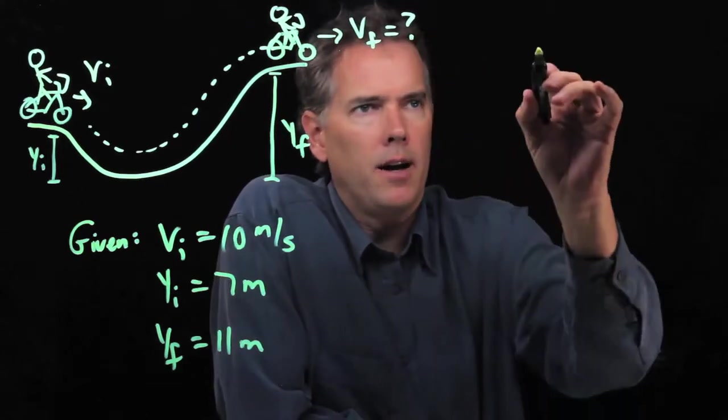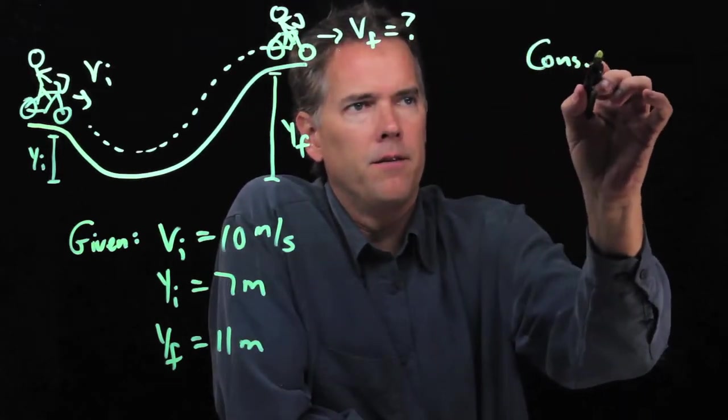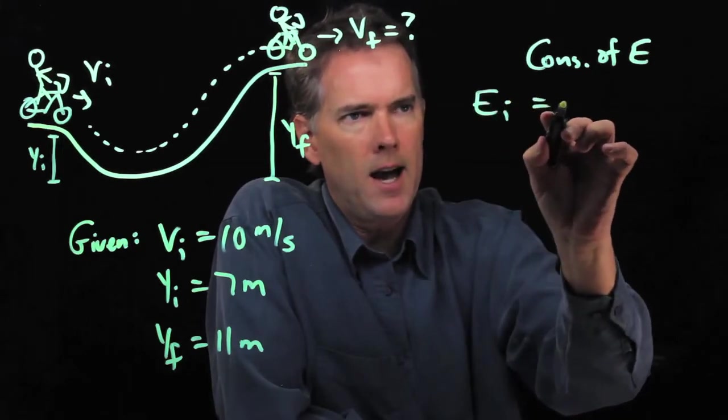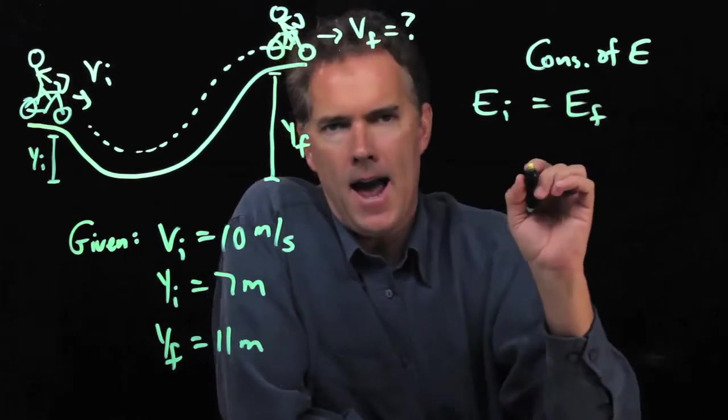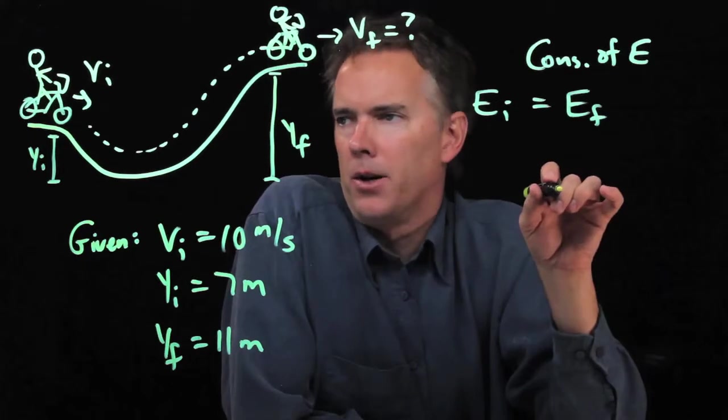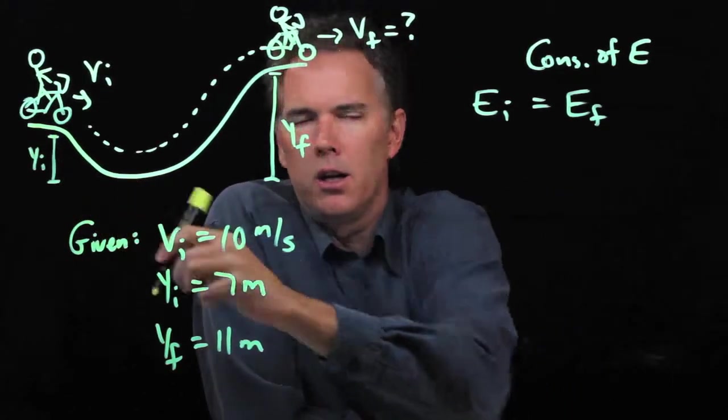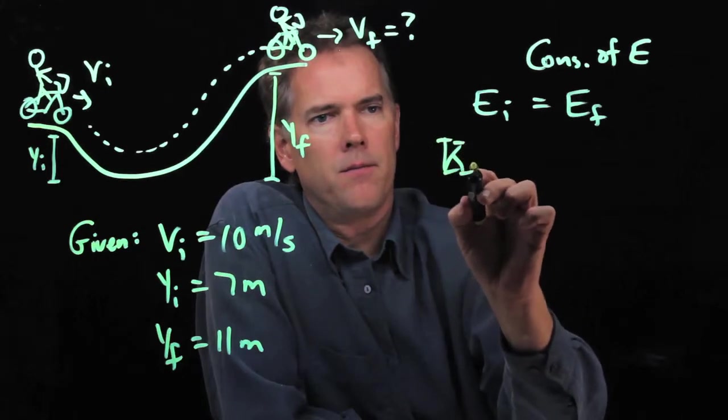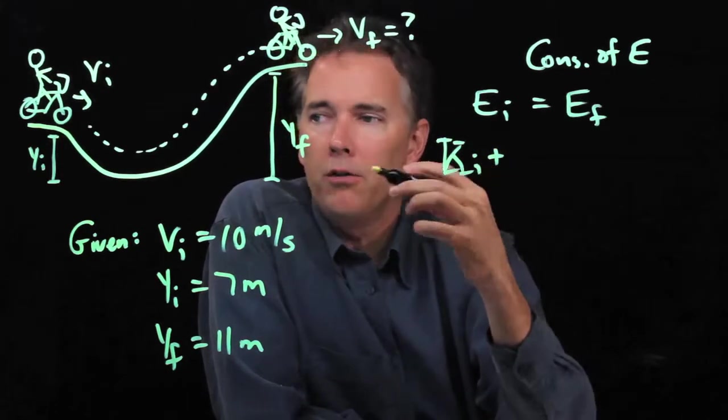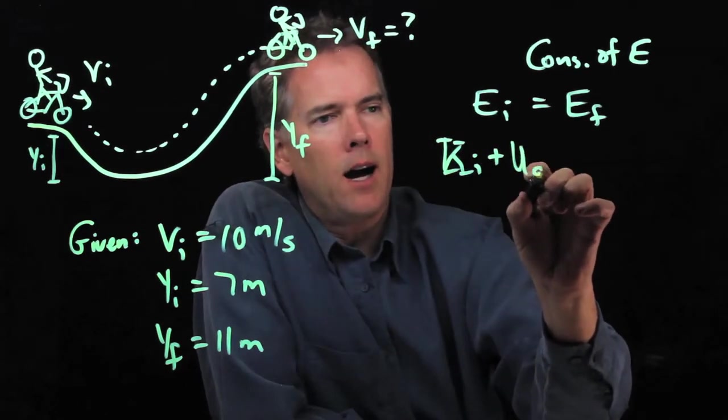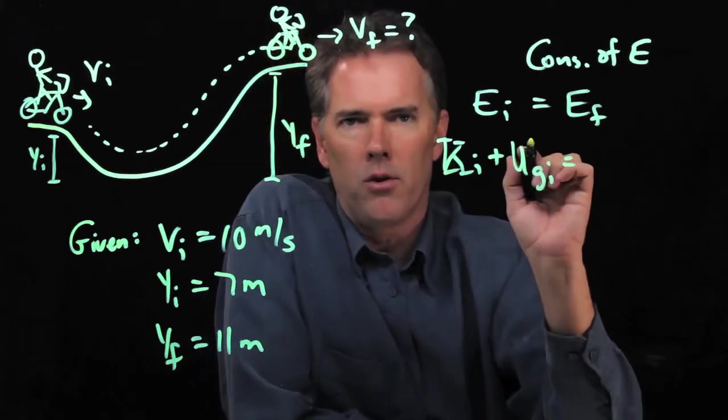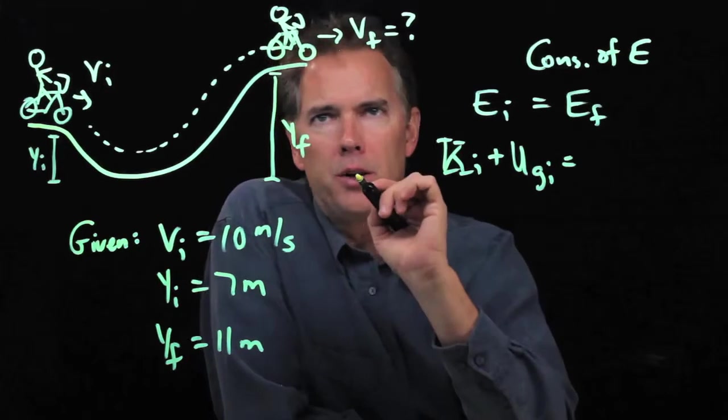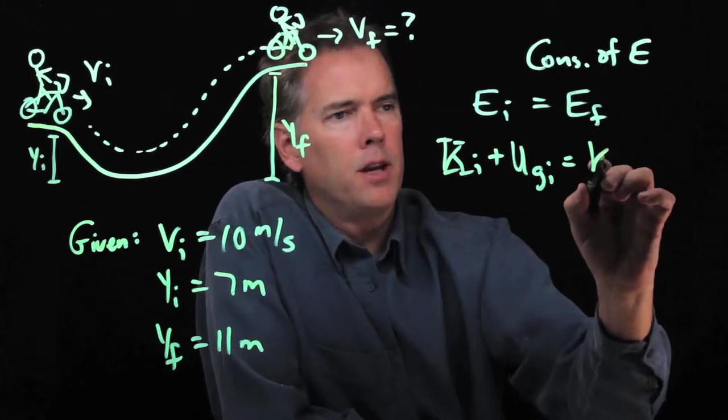Conservation of energy. What does it tell us? It tells us whatever energy we have initially has to be there in the final picture. Initially we of course have kinetic energy, but we're also at some height Yi, and so we have some initial gravitational potential energy. In the final picture we have kinetic energy.